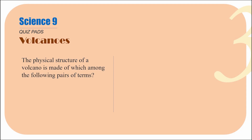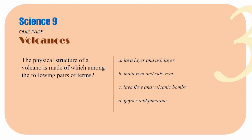Question number three: the physical structure of a volcano is made of which among the following pairs of terms? They come in pairs, so if one term is correct and the other is wrong, the whole option cannot be considered correct. We are looking for an option where both terms are correct. In our class discussions, I talked about these two terms hand in hand, relating them to the physical structure of a volcano. Option A — lava layer and ash layer; B — main vent and side vent; C — lava flow and volcanic bombs.